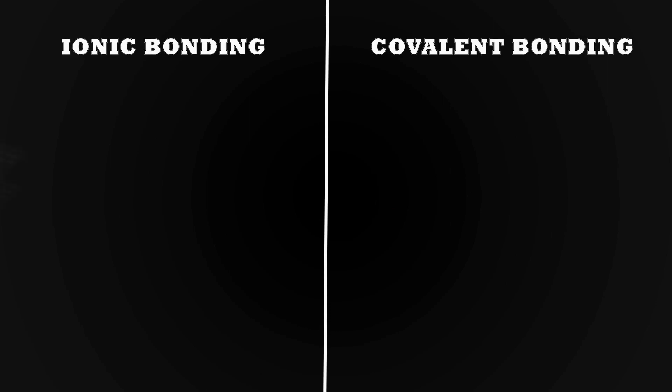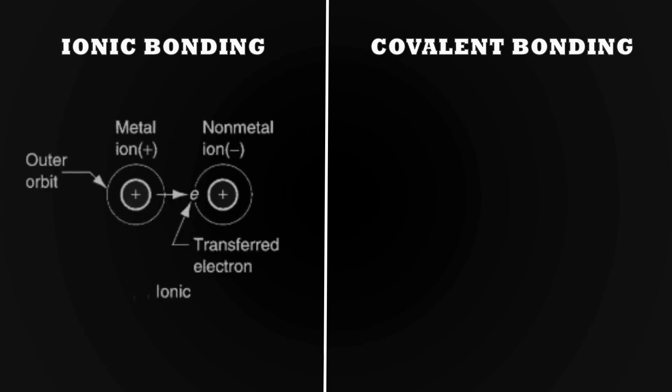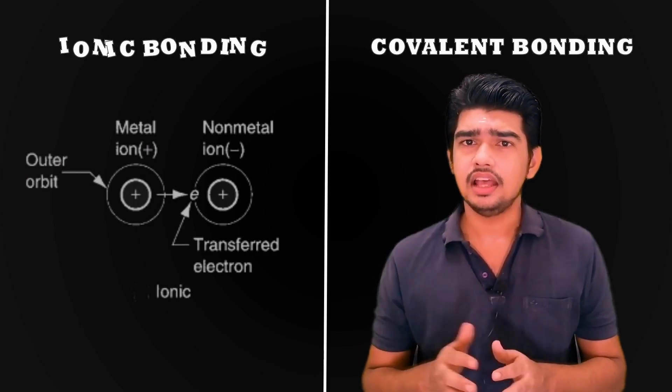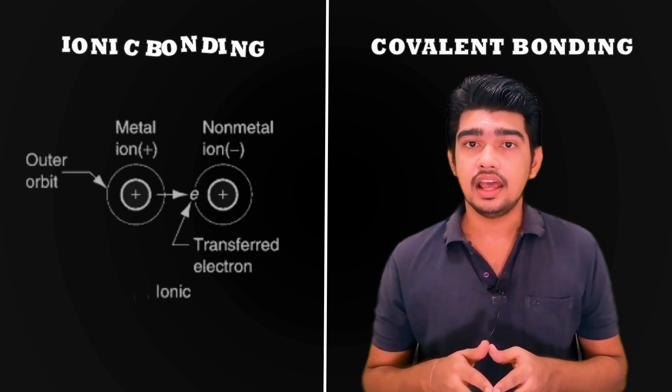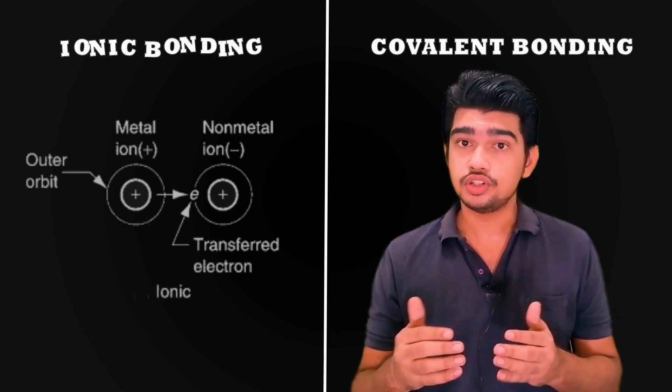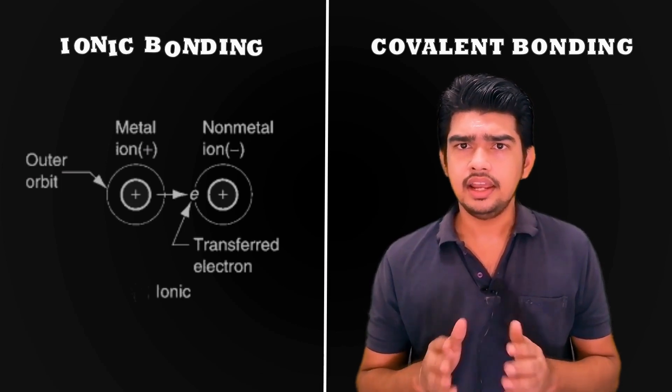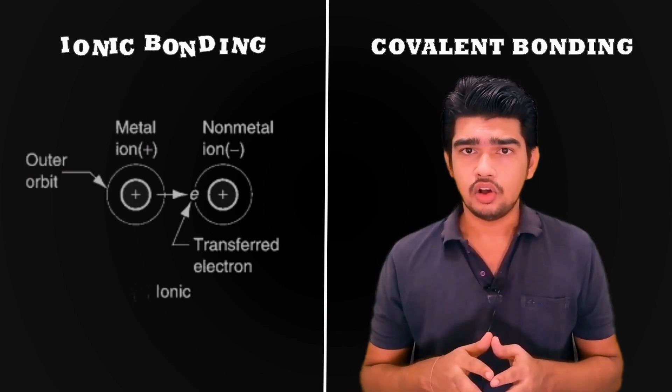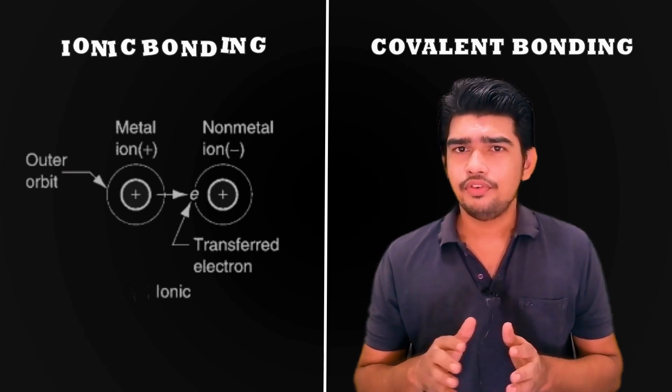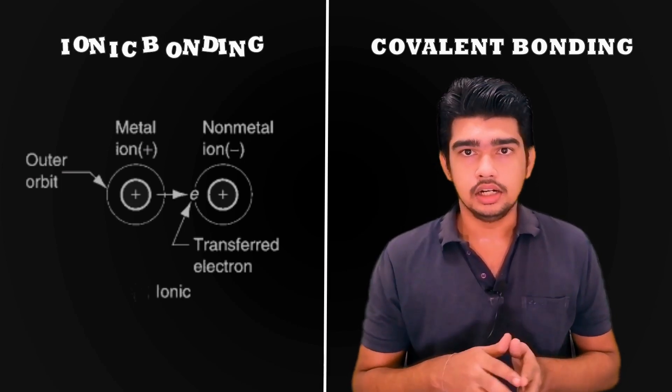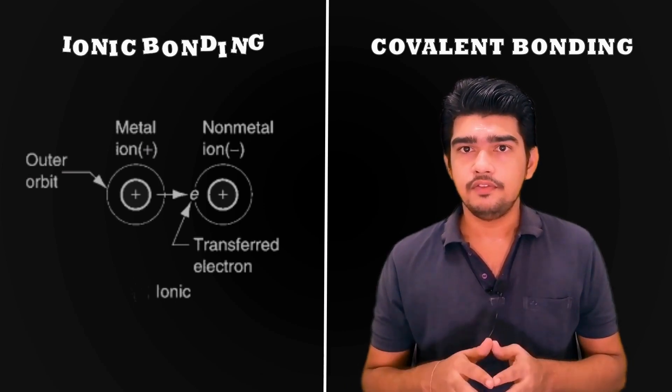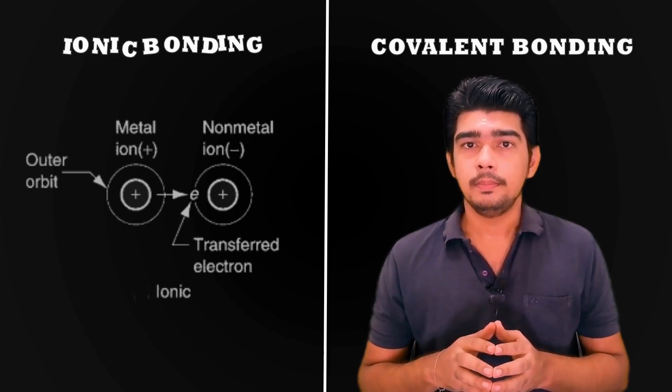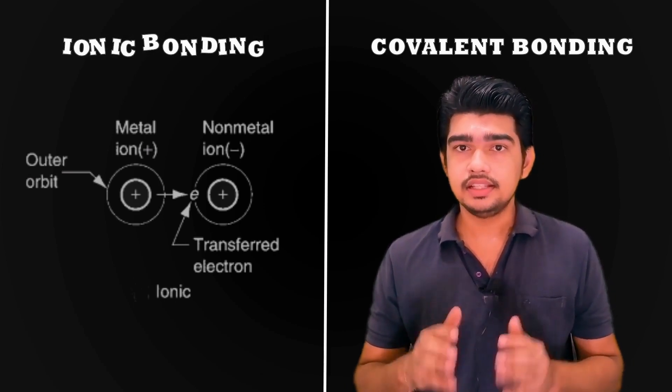In ionic bonds, the atoms of one element give up their outer electron, which are in turn attracted to the atoms of some other element, to increase their electron count in the outer shell to 8. In general, 8 electrons in the outer shell is the most stable atomic configuration, except for very light atoms like hydrogen. Nature provides a very strong bond between atoms that achieve this configuration.